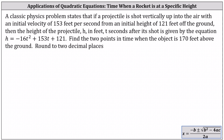A classic physics problem states that if a projectile is shot vertically up into the air with an initial velocity of 153 feet per second from an initial height of 121 feet off the ground, then the height of the projectile h in feet t seconds after it's shot is given by the equation h equals negative 16t squared plus 153t plus 121. Find the two points in time when the object is 170 feet above the ground, rounded to two decimal places.